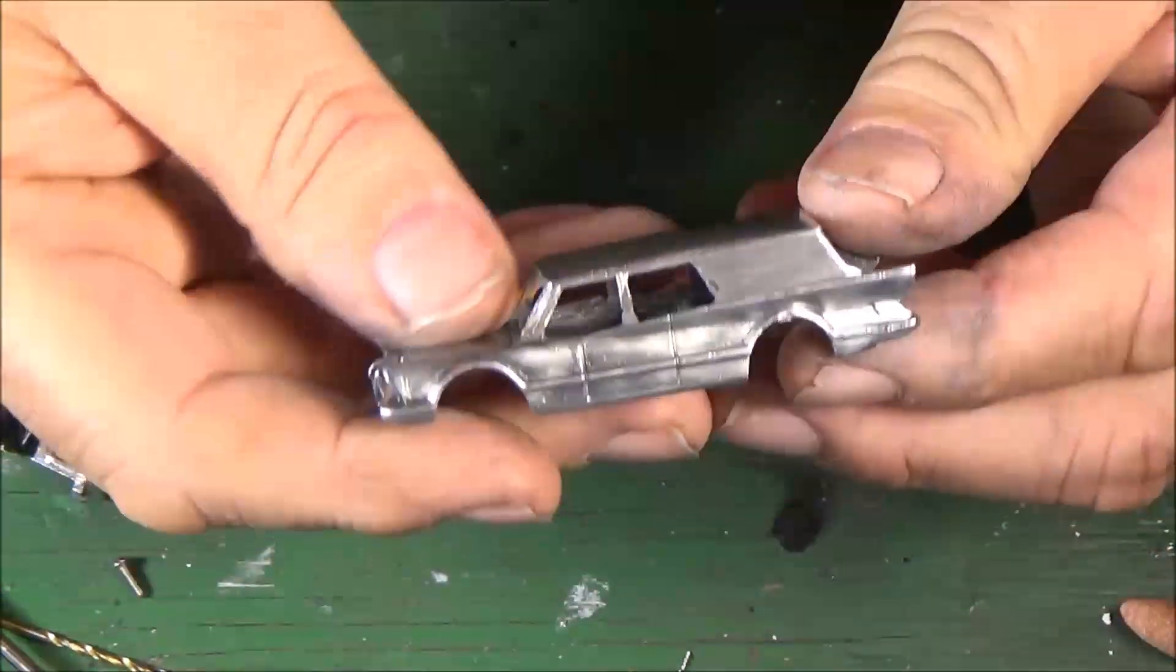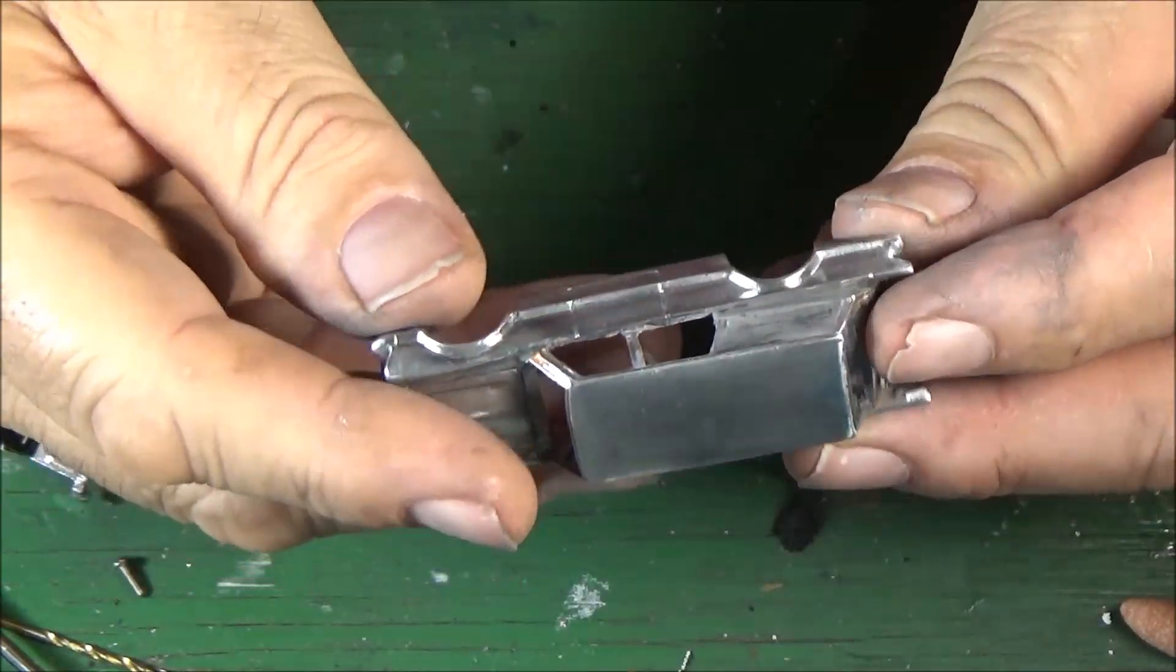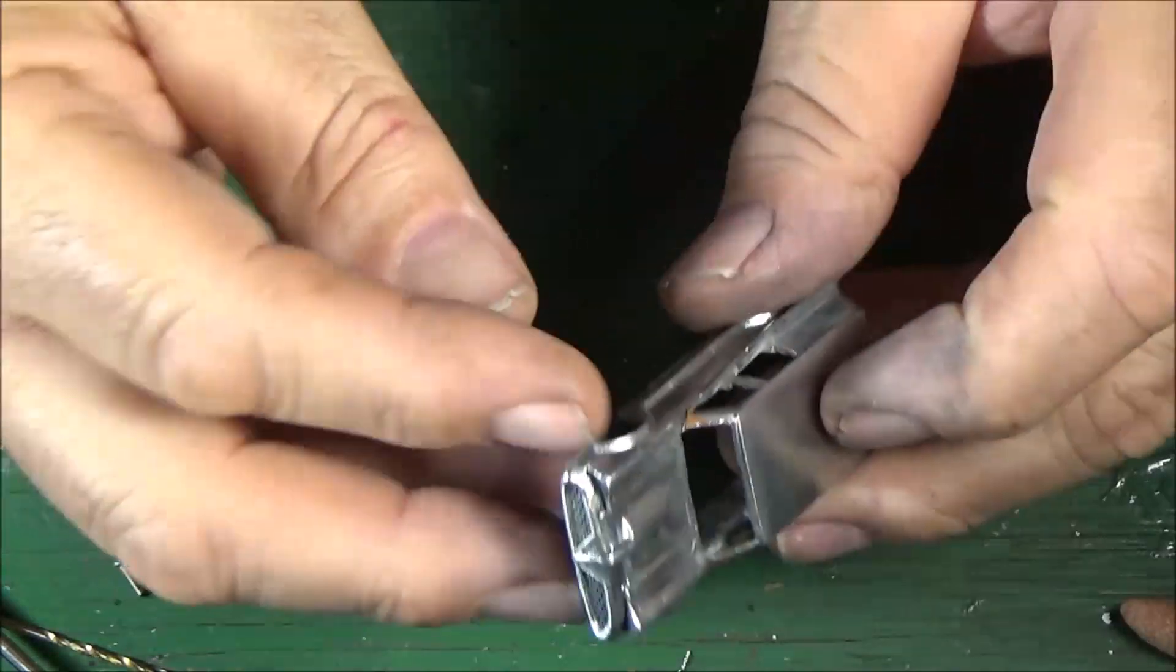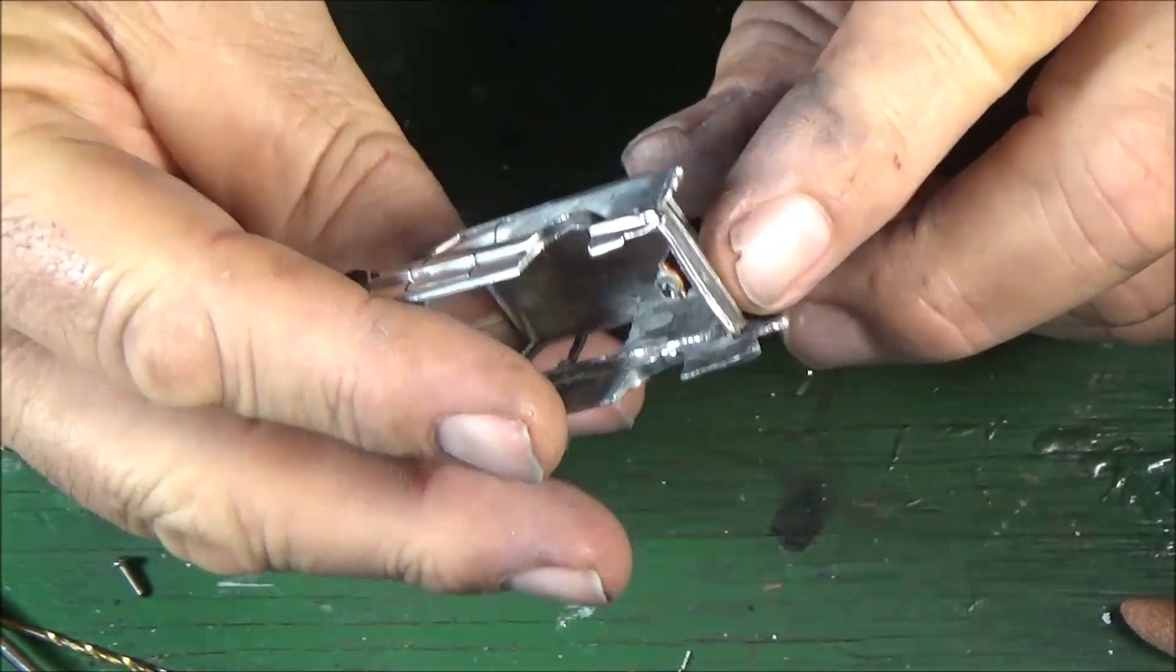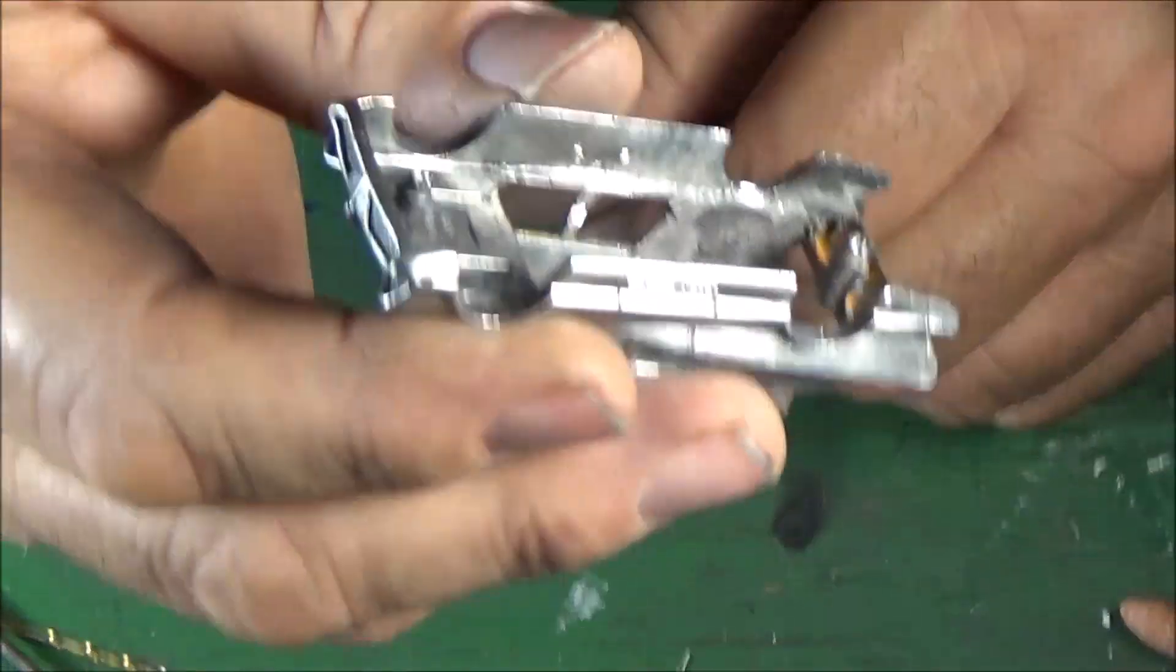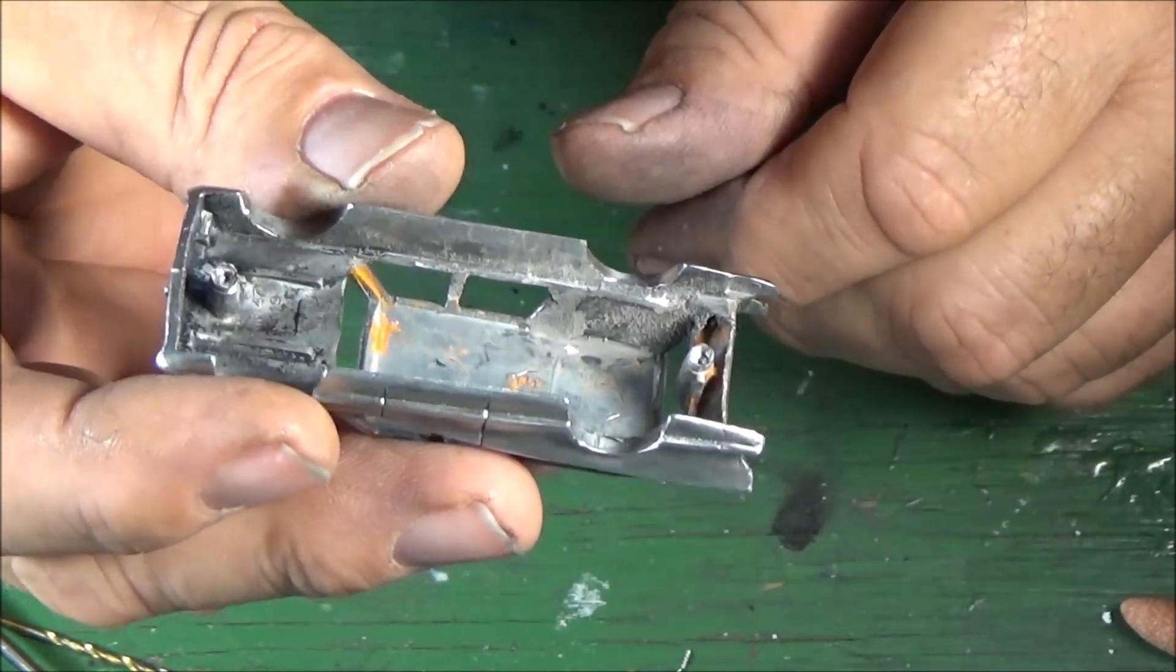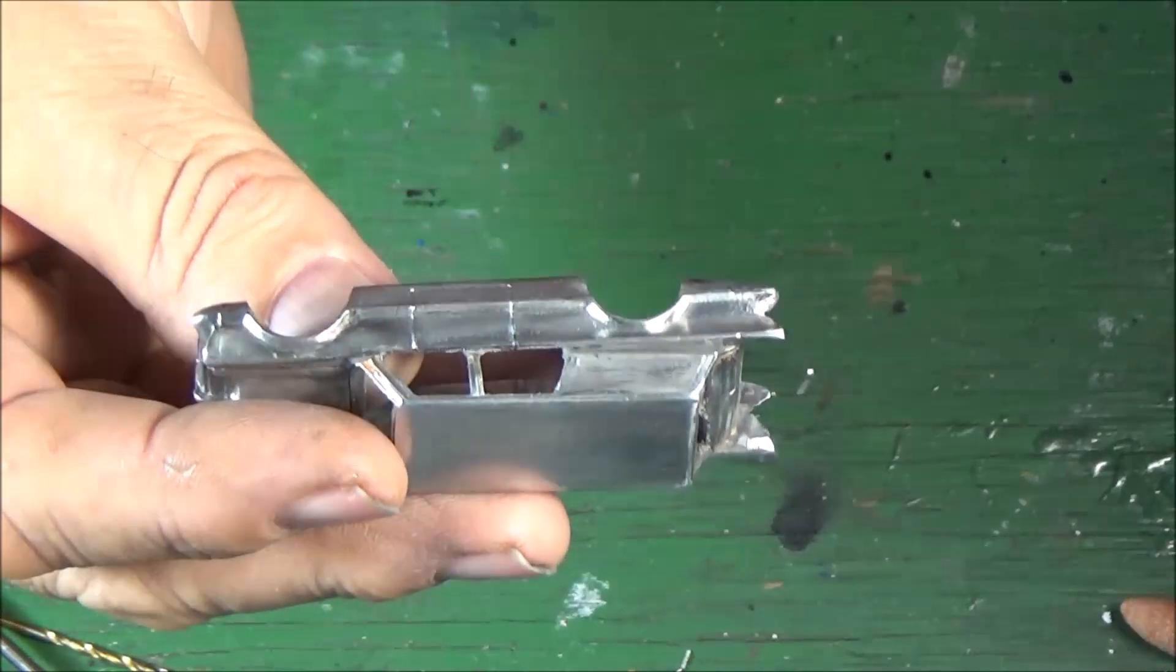Alright, I went ahead and did some JV welding. I got the top adhered to the Batmobile. I put JV weld on all the posts and JV welded it to the back of the car here. I don't know if you can see that on the inside or not. Then I went ahead and JV welded the back windows shut.